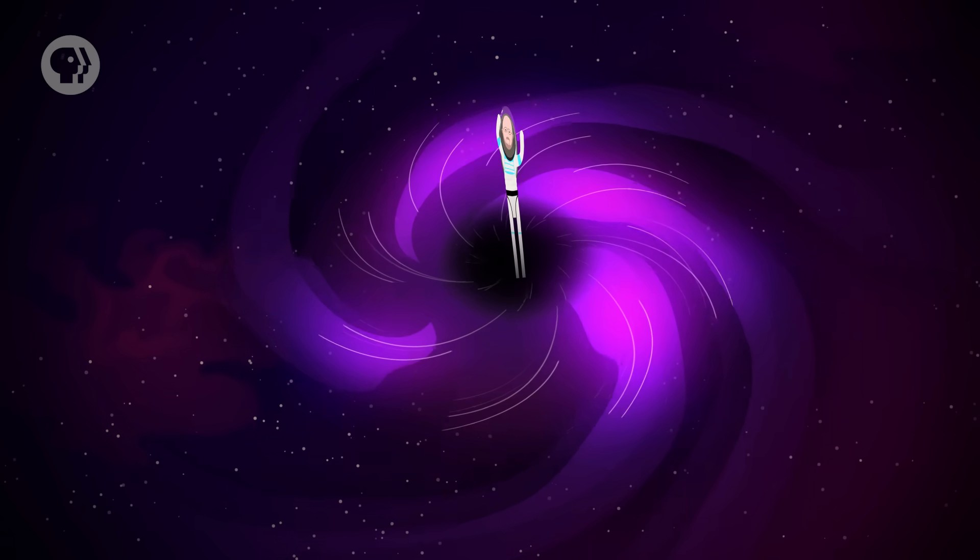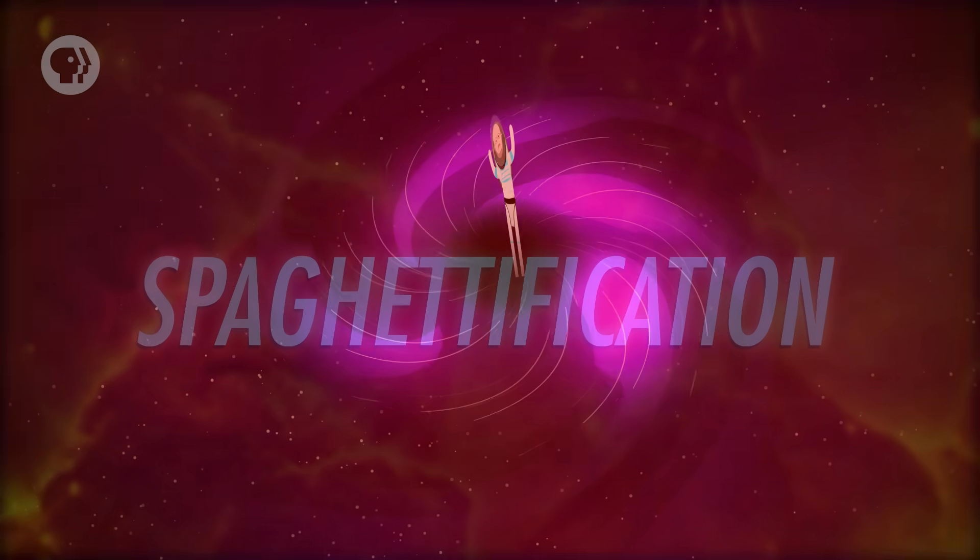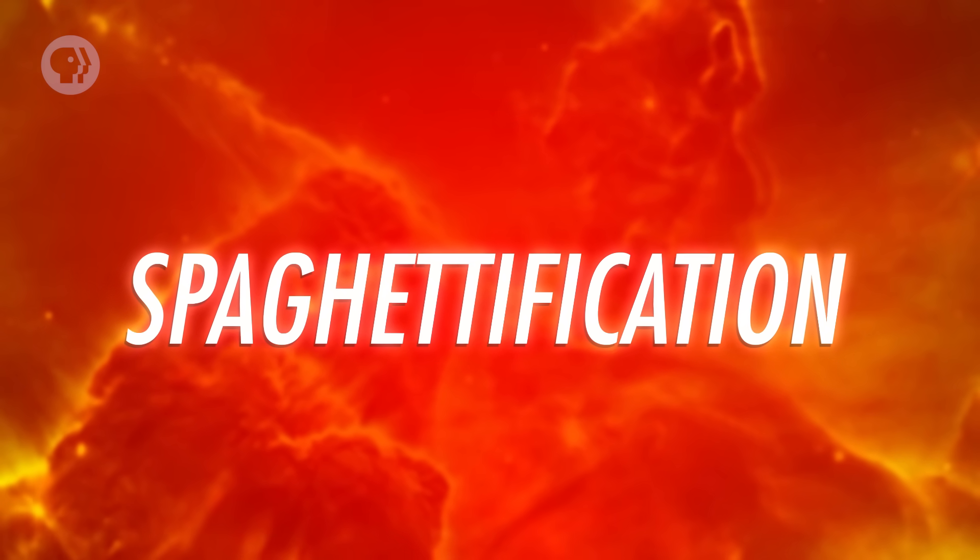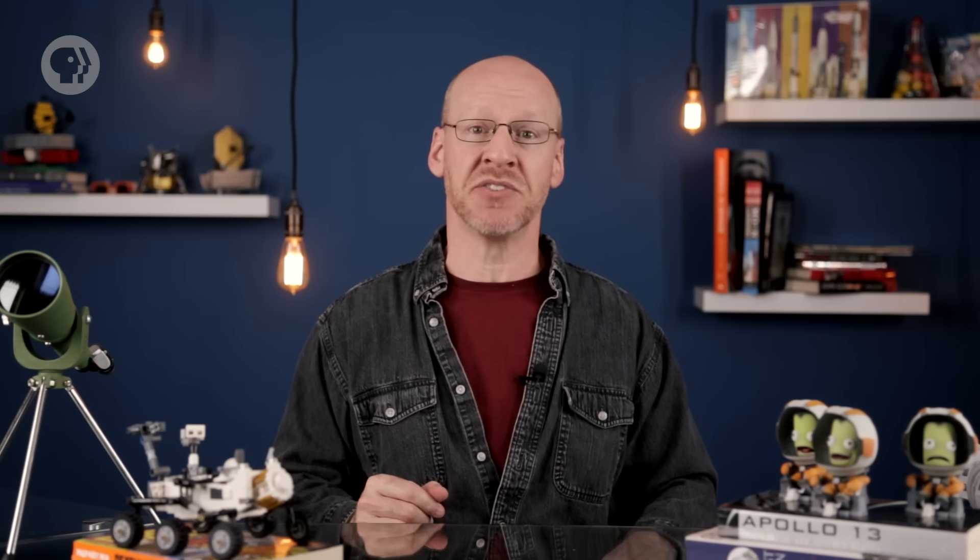Astronomers call this, and no, I'm not kidding, spaghettification. This would happen pretty close to the black hole, just a few dozen kilometers out. If you fell in from a long distance, you'd be moving pretty near the speed of light by that point, and you'd only have a millisecond or so before it killed you anyway, so yay? Note that this is only for stellar mass black holes.